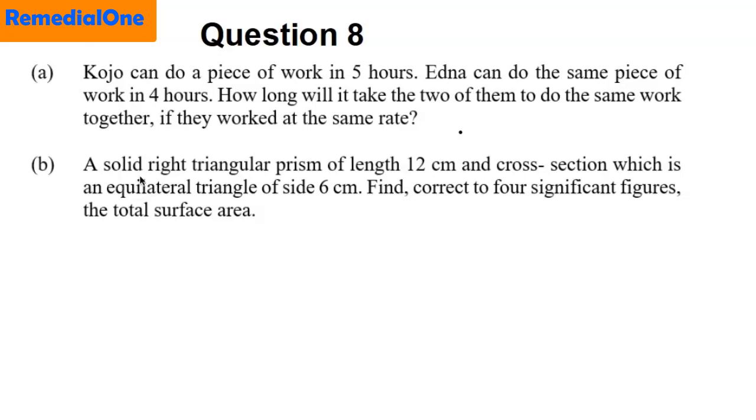Part A: Kojo can do a piece of work in 5 hours. Edna can do the same piece of work in 4 hours. How long would it take the two of them to do the same work together if they work at the same rate? Part B: A solid right triangular prism of length 12 cm and cross-section which is an equilateral triangle of side 6 cm. Find correct to 4 significant figures the total surface area.